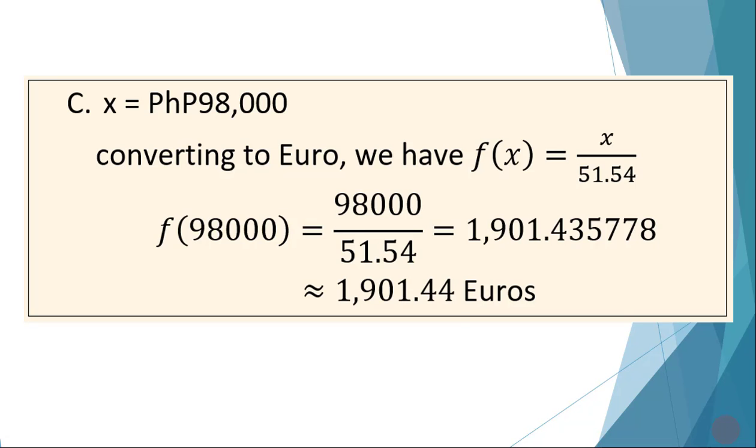For letter c, we have x = Philippine peso, 98,000 worth of pesos. And we are to convert how many euros this could be. So converting to euro, we have to use the function f(x) given. And we are to find f(98,000). So we just simply substitute x = 98,000 and it becomes 1,901.44 euros. And we're done with this problem.